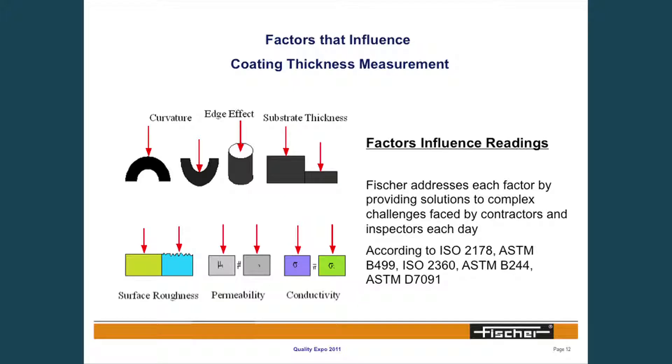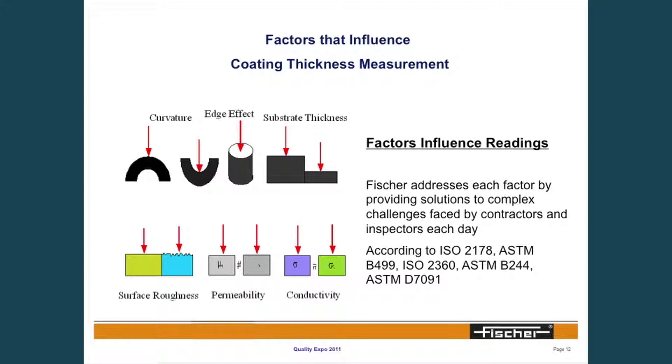There are things that influence film thickness measurement. This is an example that ASTM uses of those factors: curvature, how close we're measuring to an edge, substrate thickness, and conductivity can all influence readings if we don't have an instrument that compensates for that, or if the probe isn't optimized for those specific part geometries. A lot of times people will have a probe capable of measuring on a curved surface, but it might not be the most ideal probe for that particular diameter or curvature. Looking deeper at probe specifications can help us achieve the goal of reducing material costs.